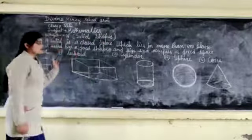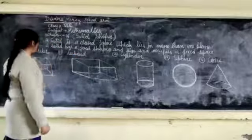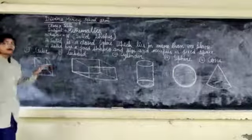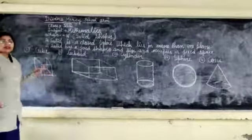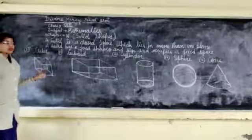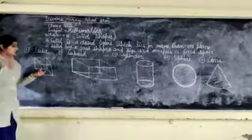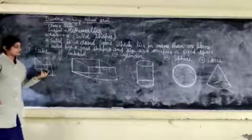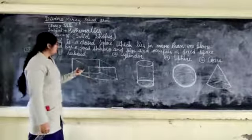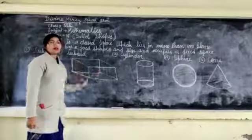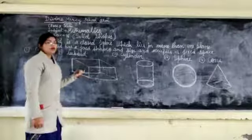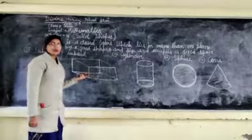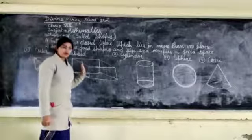Now I am going to tell you the types of solid figures. First one is a cube. This is a cube — like a box or an ice cube, these are cubes. So the cube is a solid figure; it occupies a fixed space. The second one is a cuboid. Cuboids are like a matchbox, an oven, or a microwave — these are called cuboids. So these are examples of a cuboid, which is also a solid figure.